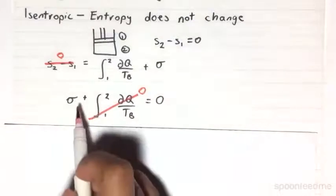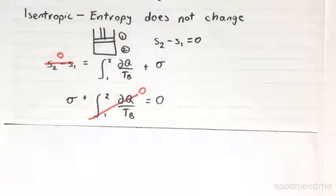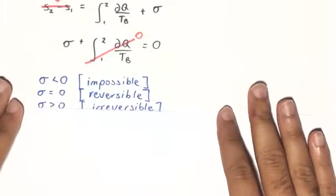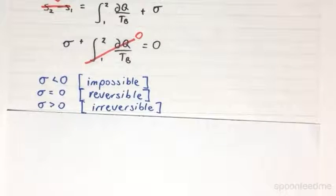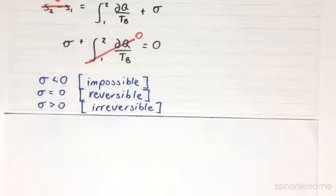Which means that the entropy generated will be 0. Now if you go back to the second law of thermodynamics fundamentals, the entropy generated term is the term which determines whether or not a process is possible.